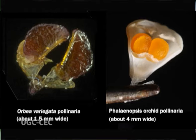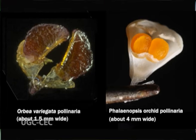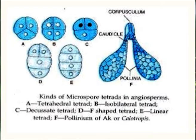The pollenium occurs in pairs forming balloon-like structures called pollinaria. Each pollenium consists of a stalk called the corpusculum, a disc-like caudicle, and two pollinaria which carry a mass of pollen grains.